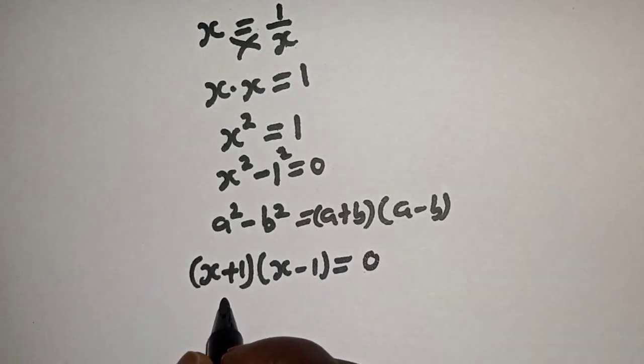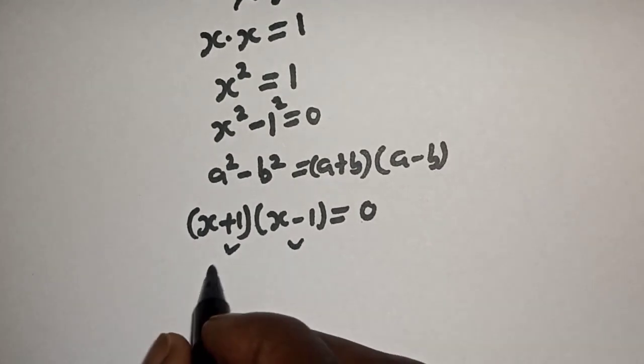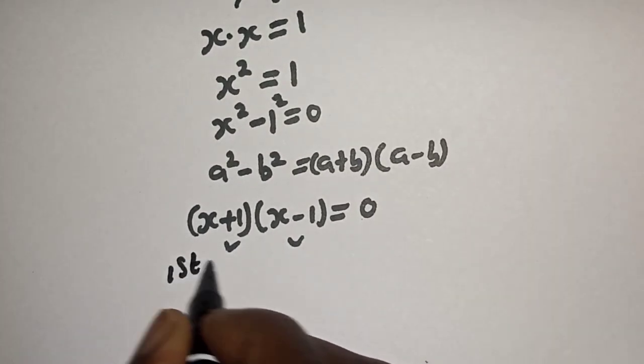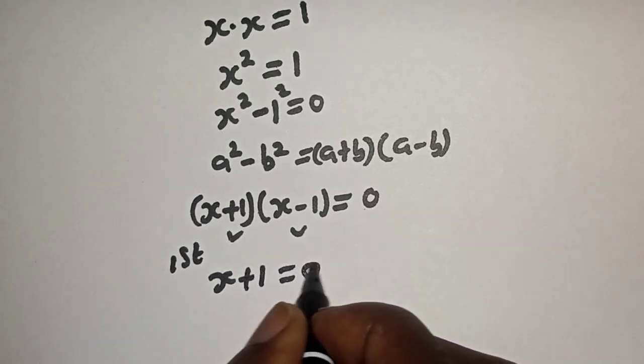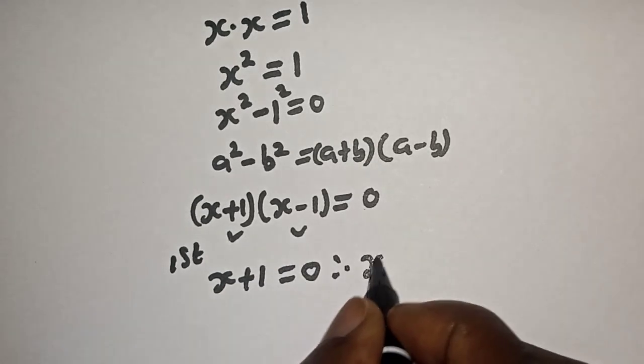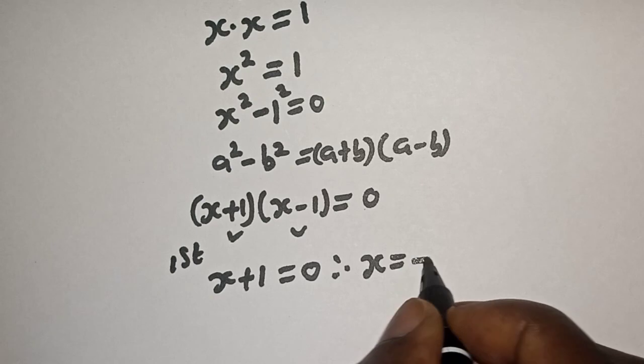There are two cases here. The first case is s plus one is equal to zero, therefore s is equal to minus one.